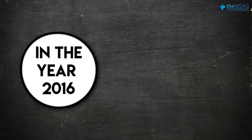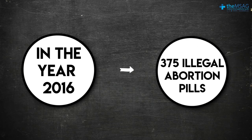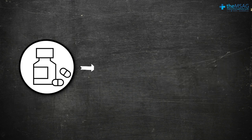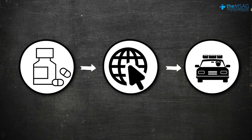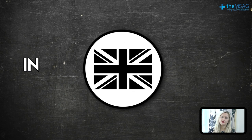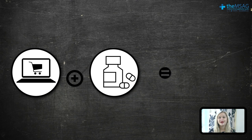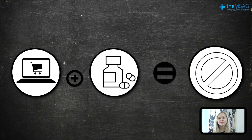It worries me when I hear that some areas still do not provide legal abortions. Have you seen in the news about the increasing number of women buying online abortion pills? In 2016, 375 illegal abortion pills that had been bought on the internet were seized by the police. Although it's illegal for a woman to have an abortion in the UK without medical approval, buying pills to do it yourself is illegal and dangerous. If barriers to legal abortions are increased, we will be putting more women at risk as more would turn to dangerous unregulated abortion pills.